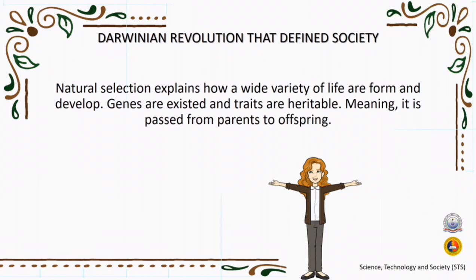Charles Darwin chose the name natural selection to contrast with artificial selection. By choosing which pigeons mated with others, Darwin and other scientists of his day argued that a process much like artificial selection happened in nature without any human intervention. He argued that natural selection explained how a wide variety of life forms developed over time from a single common ancestor.